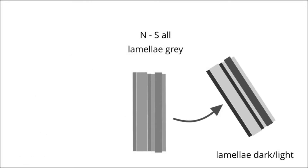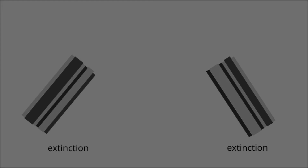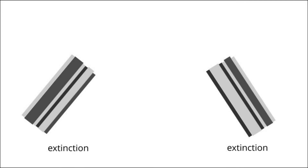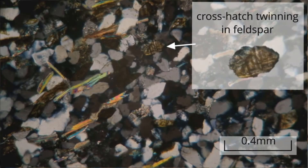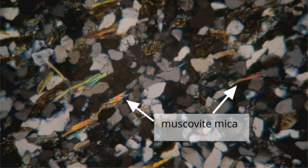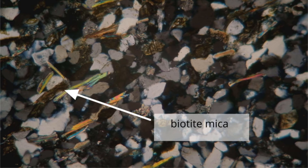Rotation in the other direction results in alternate lamellae reaching their extinction position. Note that the mineral has an inclined extinction, meaning that the mineral goes extinct when the elongate direction is neither east-west nor north-south. This is a different type of feldspar — it appeared as a yellow stained grain under plain polarised light, so it is potassium-rich feldspar or K feldspar. Note that the grain shows cross-hatch twinning under crossed polars. The muscovite mica shows up to second-order interference colours, while biotite mica shows up to mid-third-order interference colours, but these colours are masked due to the strong body colour of the biotite.